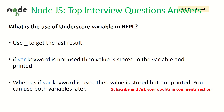What is the use of the underscore variable in REPL? We use underscore to get the last result, which is stored in memory. If the var keyword is not used, the value is stored and printed; if var is used, the value is stored but not printed. We can use both variables later as well.